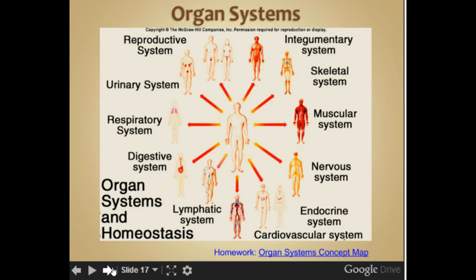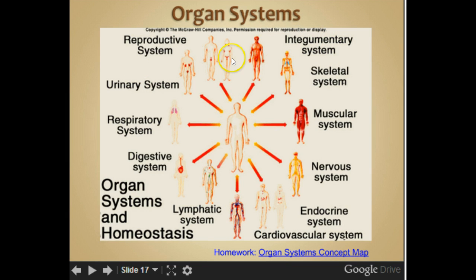Here are some of the organ systems. We have the reproductive system, urinary system, respiratory system, digestive system, lymphatic system, cardiovascular system, endocrine system, nervous system, muscular system, skeletal system, and the integumentary system. Some of these you're very familiar with. The lymphatic system deals with our immune system, the endocrine system deals with hormones, and the integumentary system deals with your skin.